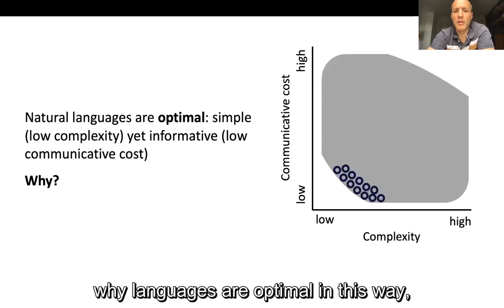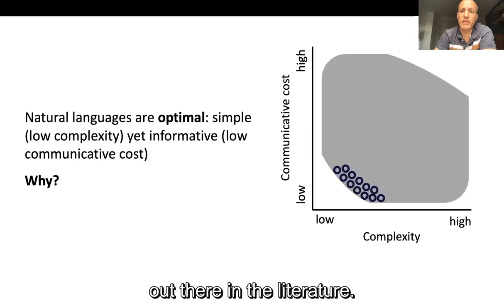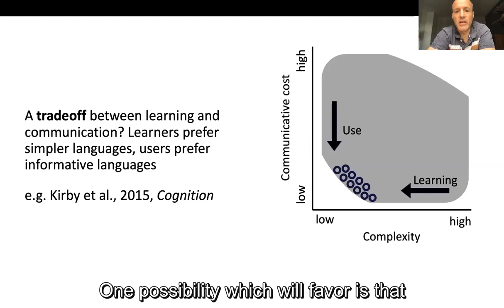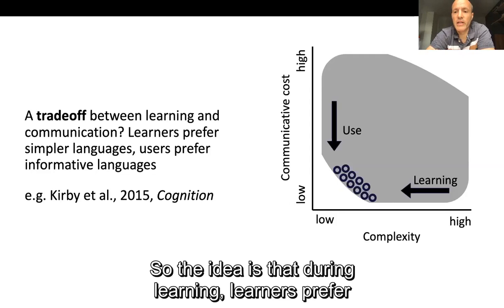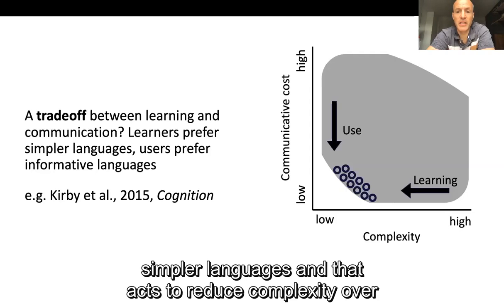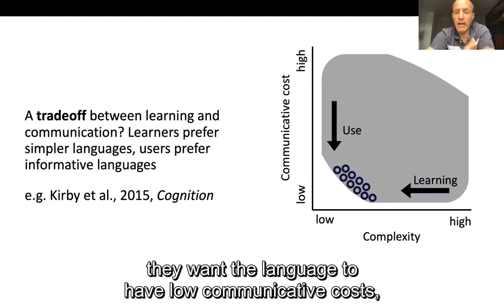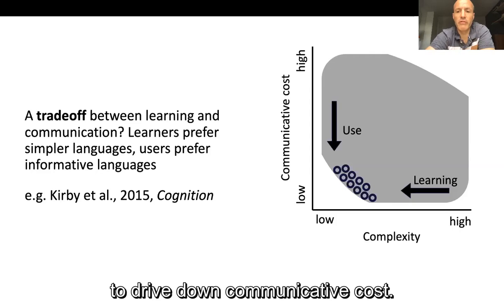What we're interested in is why languages are optimal in this way — what's enforcing this optimality. One possibility, which we favour, is that this optimality is due to a trade-off between two distinct pressures arising during language learning and language use. During learning, learners prefer simpler languages, which reduces complexity over repeated episodes. When people use a language to communicate, they want it to have low communicative cost, so language use drives down communicative cost.